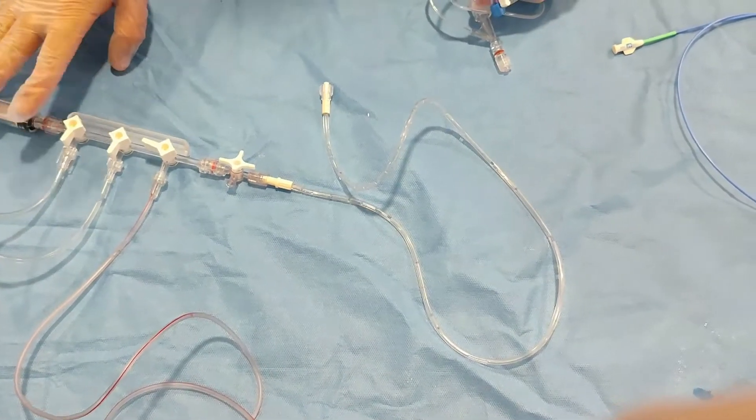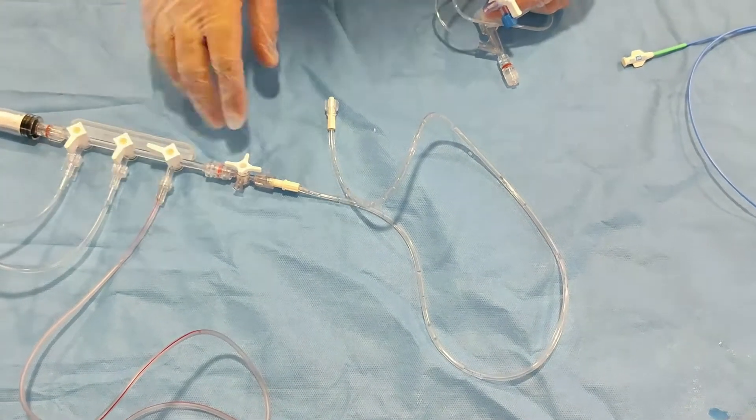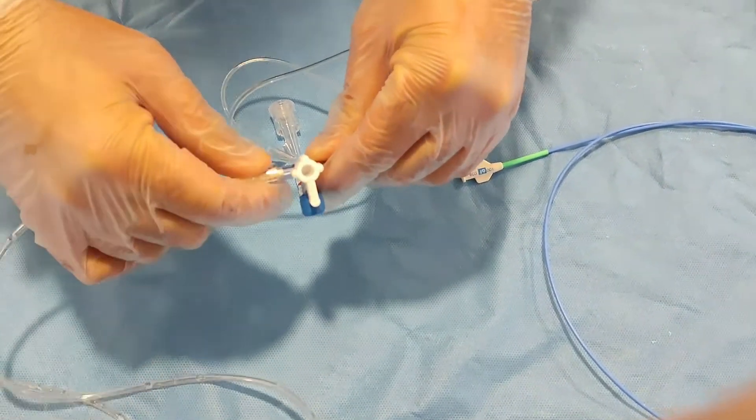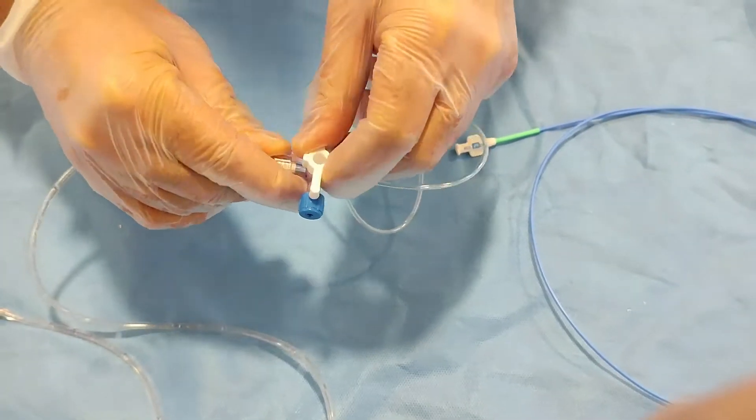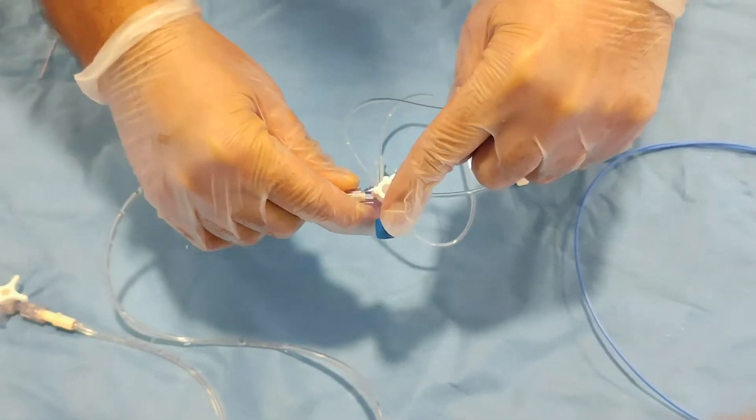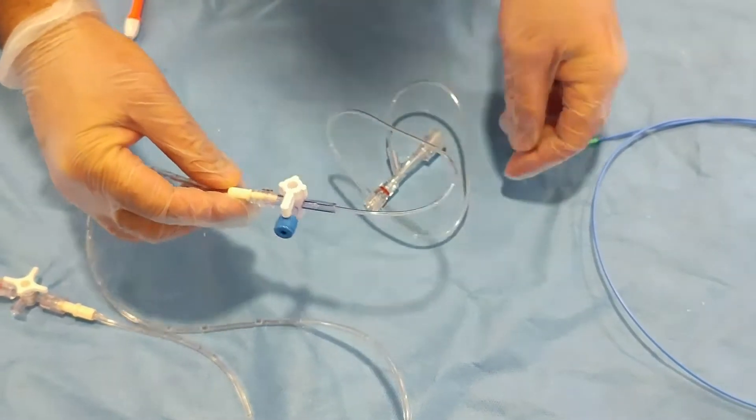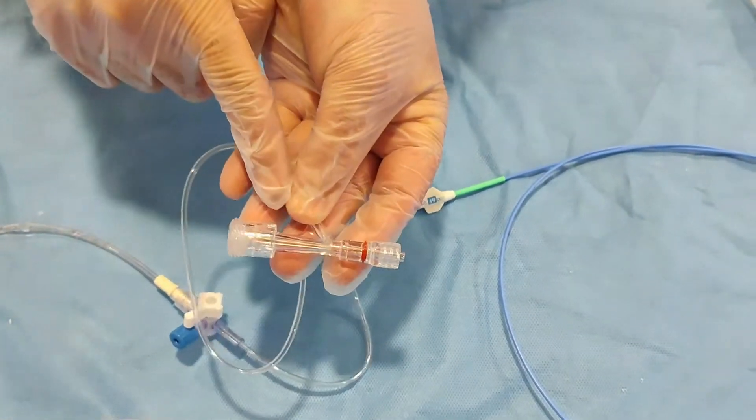So how to make it ready? This is the manifold which you have already made ready. Just take this connection, attach it here. This port, as I mentioned in the last video, this side is closed, so make it open to the operator side and the patient side.